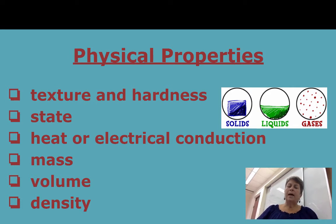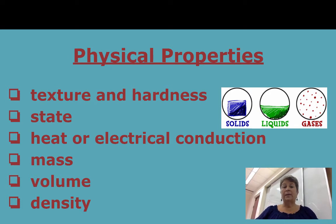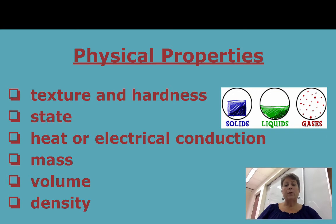Some other properties you're probably familiar with from previous science classes are mass, volume, and density. We'll be using tools here in the chemistry lab — graduated cylinders, beakers, flasks, and the triple beam balance. We'll be measuring mass and volume and then calculating the density of a few different objects. We'll talk more about that lab and the procedure later on.